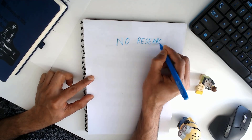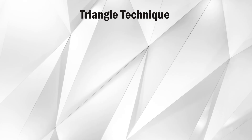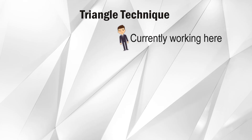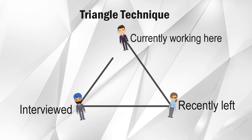The second mistake that we all make is not doing enough research. When you apply for a job, most of the time the research we do is just go to the company website and read a little about it. Instead, do your research using the triangle technique. You want to find out people who are currently working in the organization, people who have left the organization, and people who attended the interviews but either did not get through or did not take up the offer.